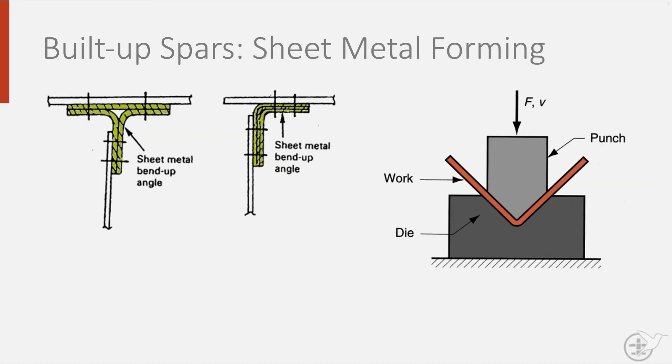In the next example, the flanges are made up of sheet metal that is formed by pushing sheet metal by a punch into a die, which is then layered to get the correct thickness along the spar and again attached to the web.